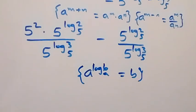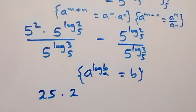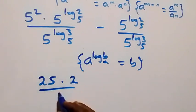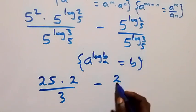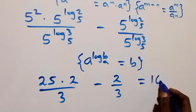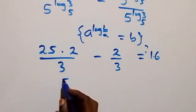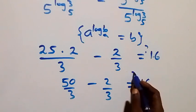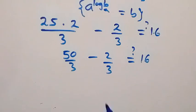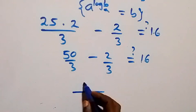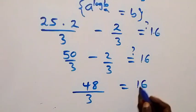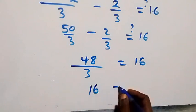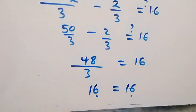So 5 squared is 25, times 2 over 3, minus 2 over 3. That gives us 50 over 3 minus 2 over 3, which is 48 over 3, equal to 16. And indeed this equals 16, so left hand side equals right hand side. Hence we confirm that x equals 1 plus log₅2 minus log₅3.